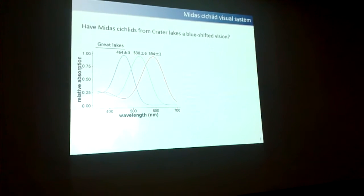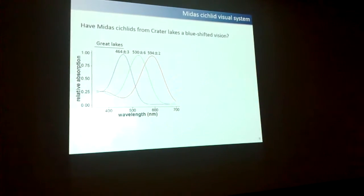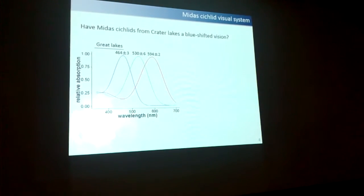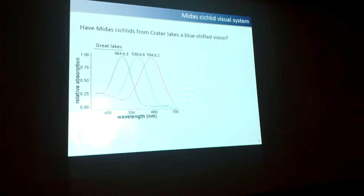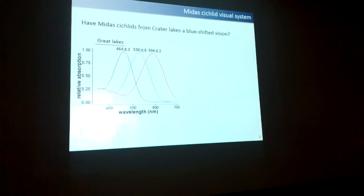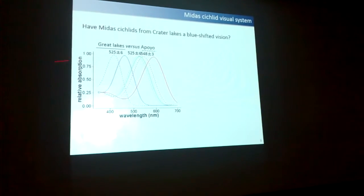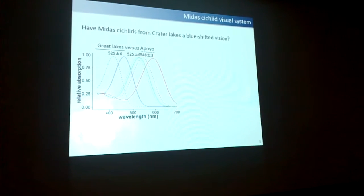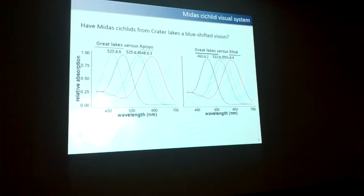The first thing I had to do was go and measure phenotypes to see if they are different. I cut open the eye and measured with microspectrophotometry, which measures the peak of maximum absorption. In fish from the great lakes, the red peak is at 594 nm, which is quite red-shifted. When you compare to Lake Apoyo, you see a strong shift towards the blue in all the pigments — though not that much in the green. In Lake Xiloá, the shift is similar but less pronounced, still visible especially in the reds and a little in the green.